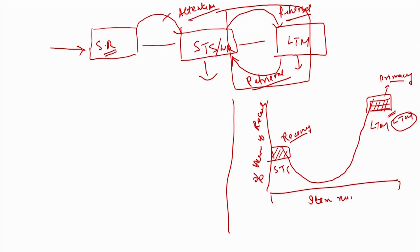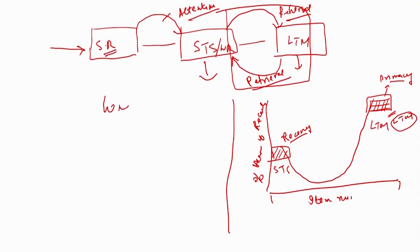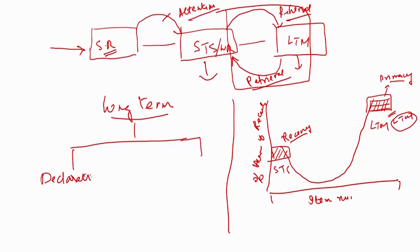Just as the short-term store is improved into the working memory store — divided into the central executive, phonological loop, visuospatial sketchpad, and episodic buffer — similarly, the long-term store or long-term memory has several subdivisions. We will look into each subdivision one by one in the upcoming lectures. Basically, there are two main subdivisions: one is called the declarative part and the other is called the procedural part. The long-term store in itself is divided into these two stores.